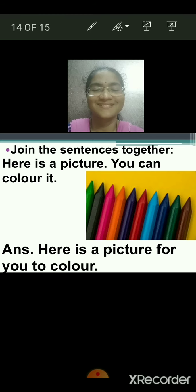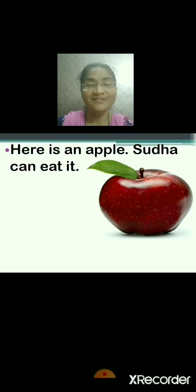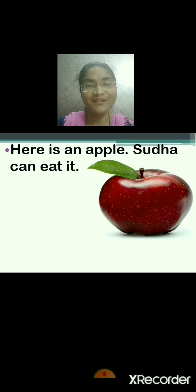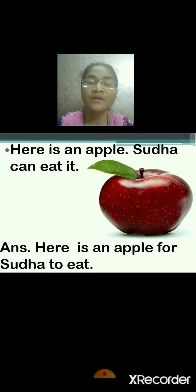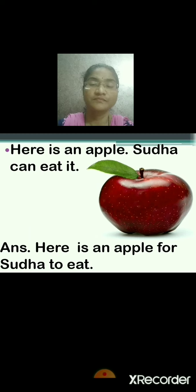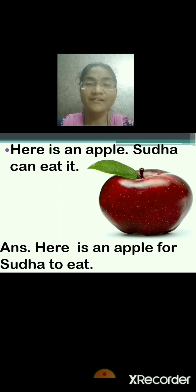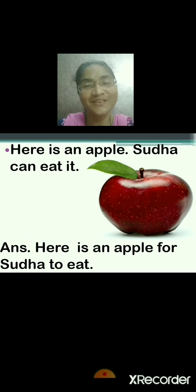Very good. Here is an apple. Sudha can eat it. Here is an apple for Sudha to eat. Correct answer. Repeat: here is an apple, Sudha can eat it. Here is an apple for Sudha to eat.